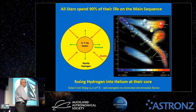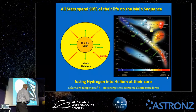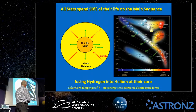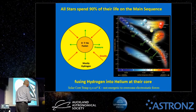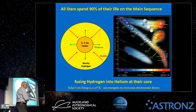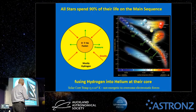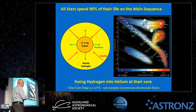Stars spend 90% of their lives on the main sequence of the Hertzsprung-Russell diagram, which plots luminosity against temperature. The 90% of stars on the main sequence diagonal are fusing hydrogen to helium nuclei — that energy generation creates outward pressure that balances the inward pull of gravity, called hydrostatic equilibrium.